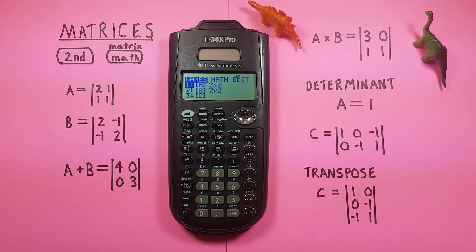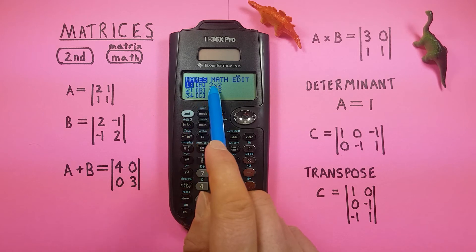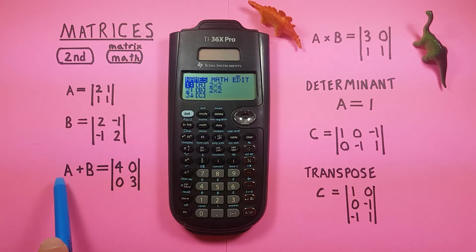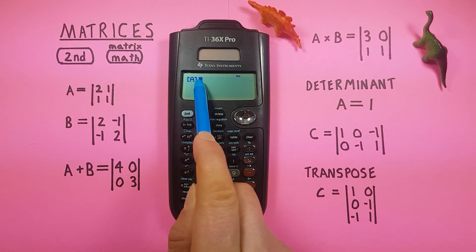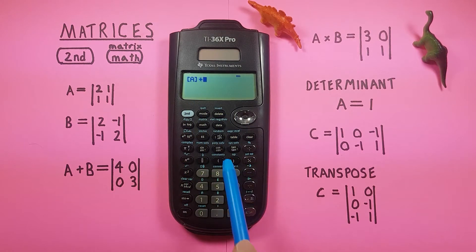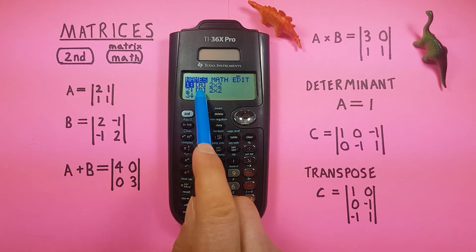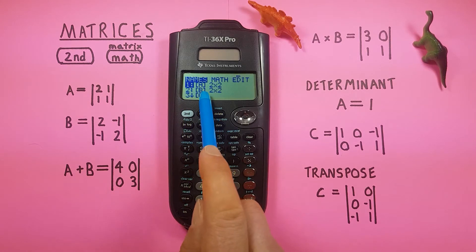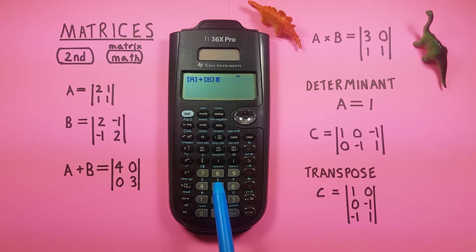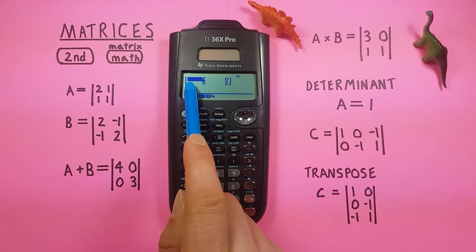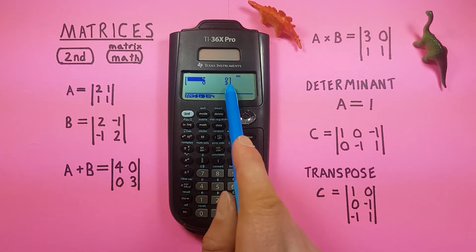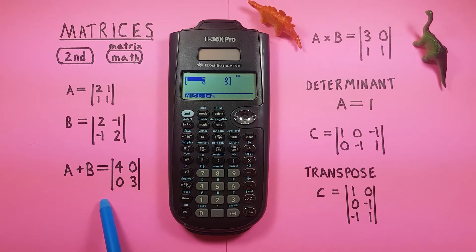Now let's do some basic functions. We can add matrices by highlighting the A matrix, pressing enter to place it on screen, then pressing plus, going back to the matrix menu, and selecting B. You'll see A plus B on screen. Press enter and we get the result: four, zero, zero, three.